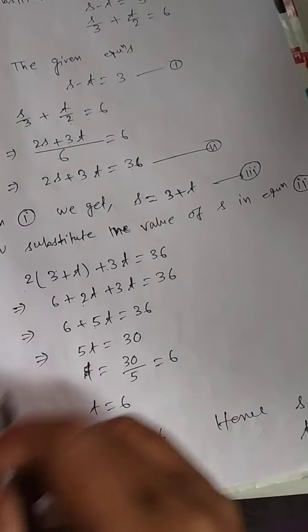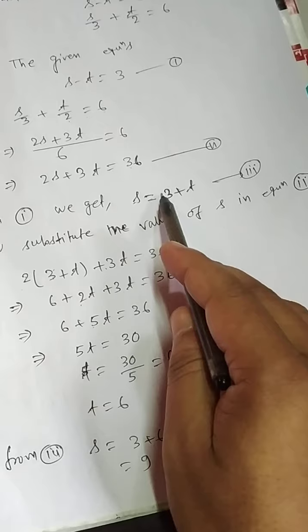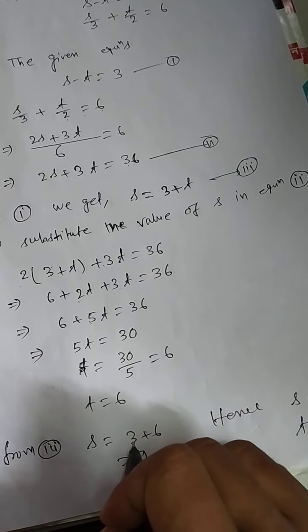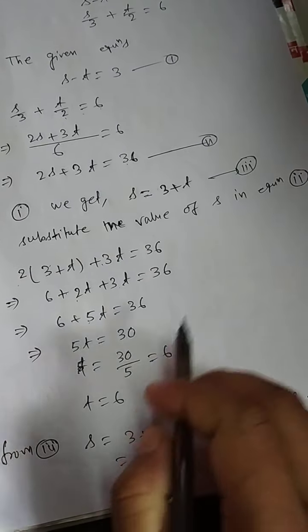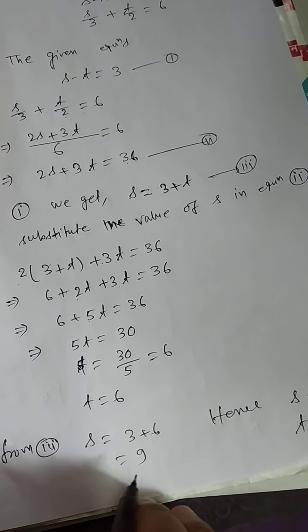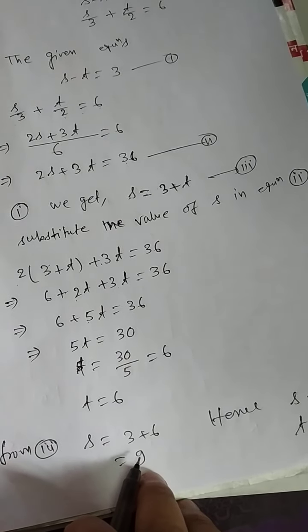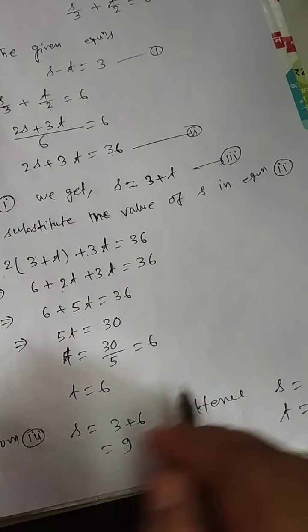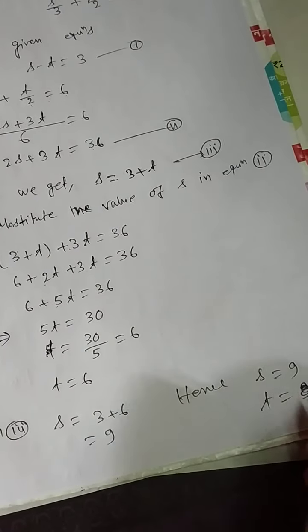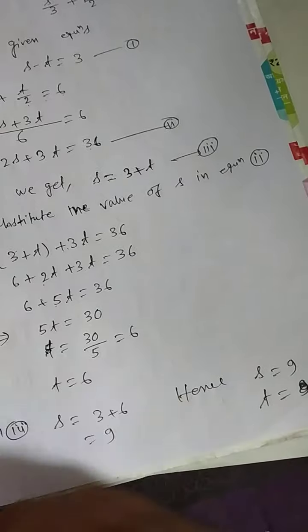From equation number 3, s equals 3 plus 6, so s equals 9. Hence s equals 9 and t equals 6.